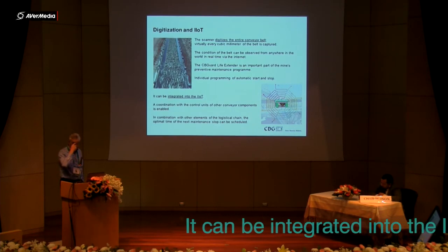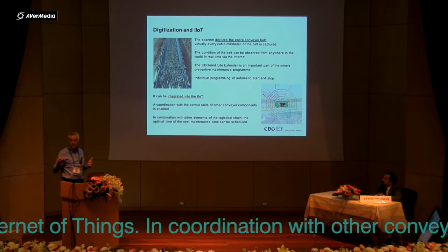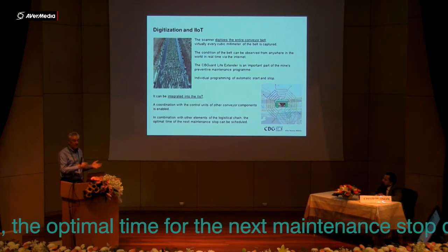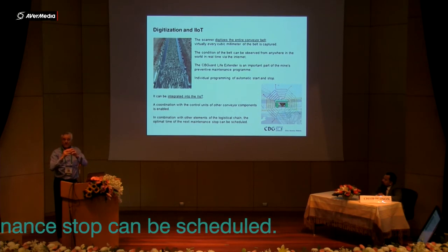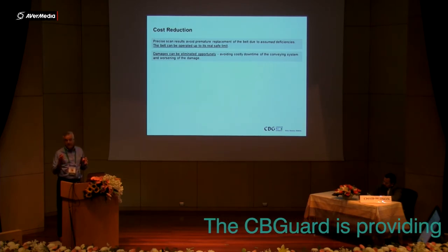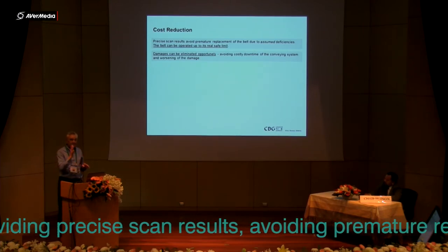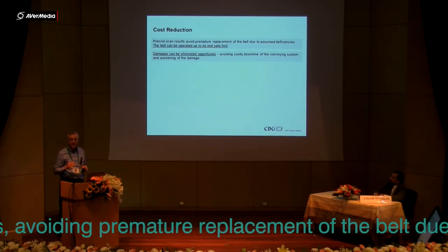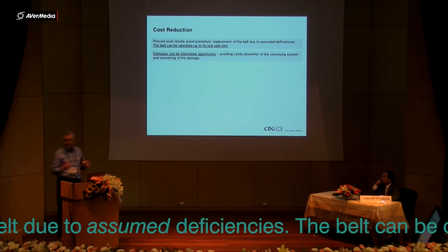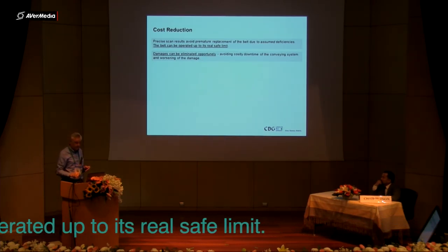The system can be integrated into the IIoT and communicate with other software, such as idler monitoring, gearboxes, and motors, so you can determine the optimum time to stop the conveyor. You no longer need to replace a belt simply because it looks worn and is out of warranty. The system tells you when it is actually time to replace it, because it knows the full condition of the belt — you don't have to guess, you just know the facts.